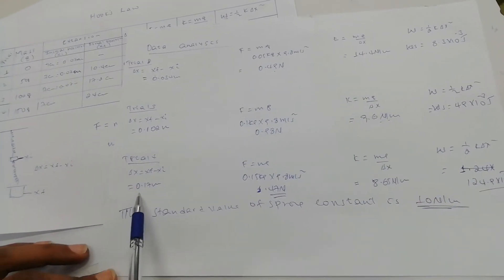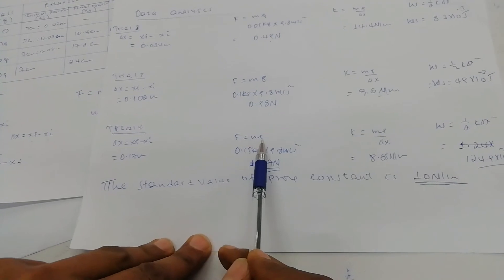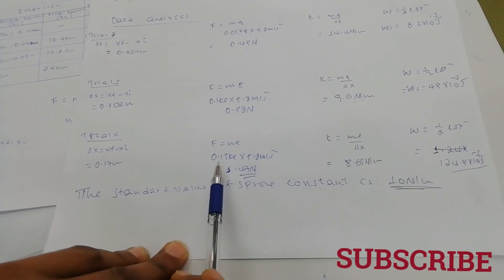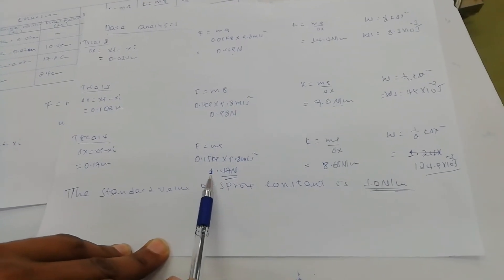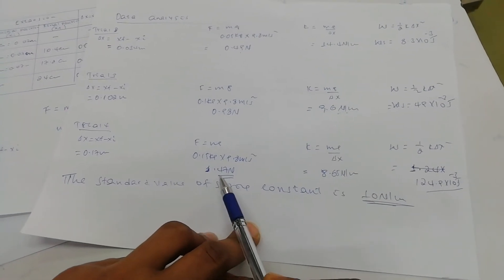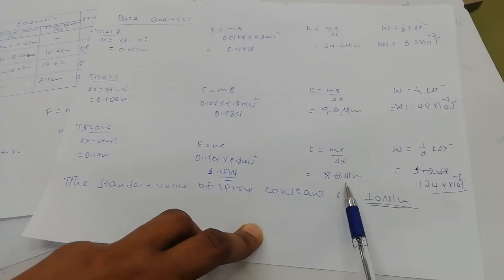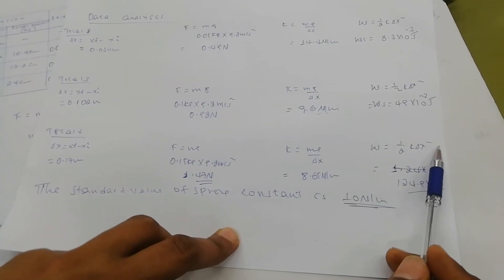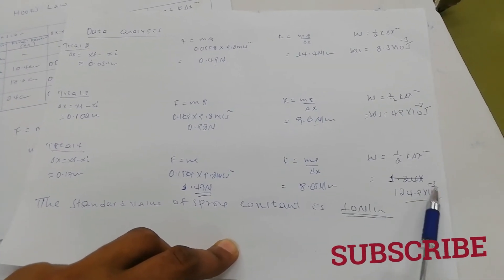The last trial: when adding 150 grams, the amount of stretch after subtracting is 0.17 meters. The force is m times g: 0.15 kilograms times 9.8 equals 1.47 newtons. The spring constant is 1.47 divided by 0.17 equals 8.65 newtons per meter. The work done on the spring is one-half k times delta-x squared, which gives around 124.9 times 10 to the power minus 3 joules.